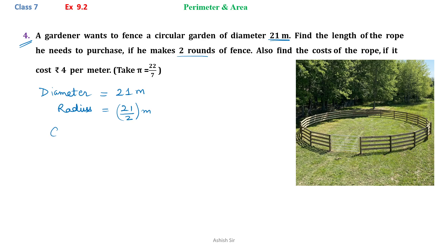Now to find out the length of the rope, we need to calculate the circumference. As the fence is around the circle, it is the boundary of the circle. So we need to find out circumference.